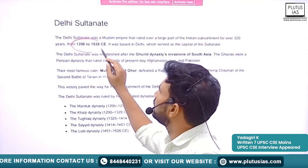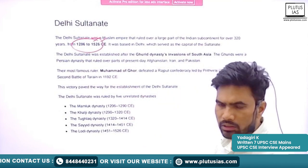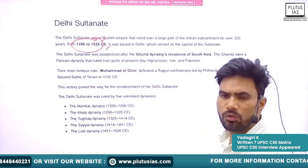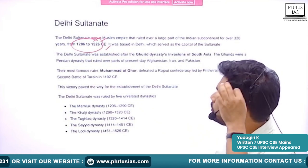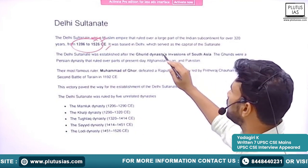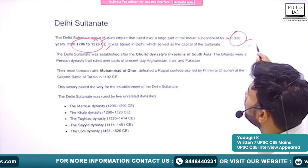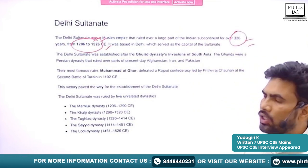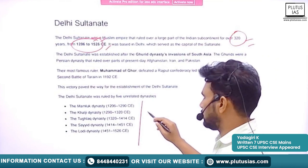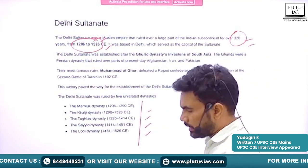Today we are going to study about the Delhi Sultanate. Briefly, the Delhi Sultanate existed between 1206 to 1526. In total, they ruled for approximately 320 years. During that period, we will see five dynasties ruling the Delhi Sultanate.